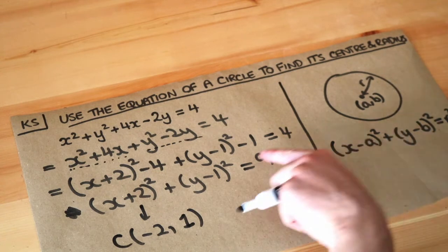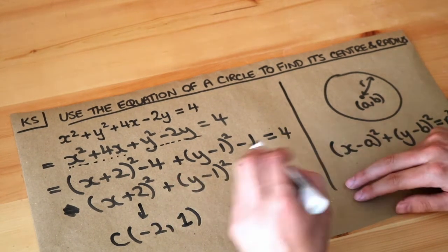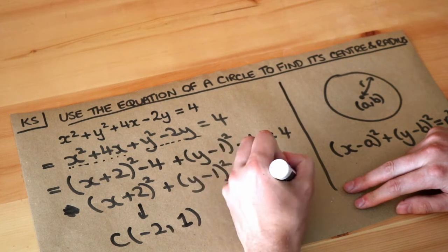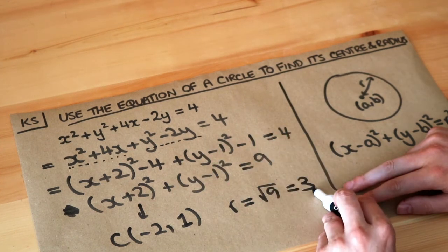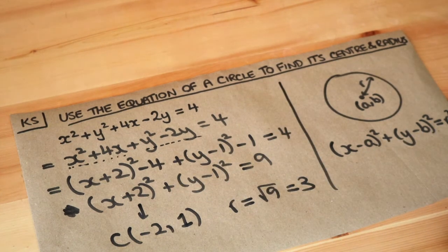And if r squared is 9 then r would just be the square root of that. So the square root of 9 which is 3. So that's the radius of the circle, and that is the center of the circle.